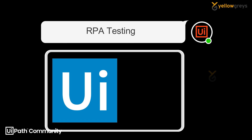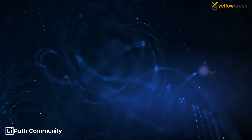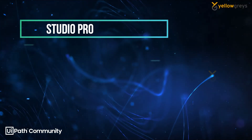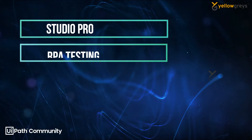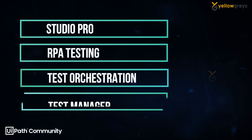Application testing is designed for software testers and RPA testing is for RPA developers. Let's focus on RPA testing first, and later we will focus on application testing. In RPA testing we are going to cover Studio Pro RPA testing, test orchestration, and Test Manager. I will cover these one by one in the upcoming sessions.